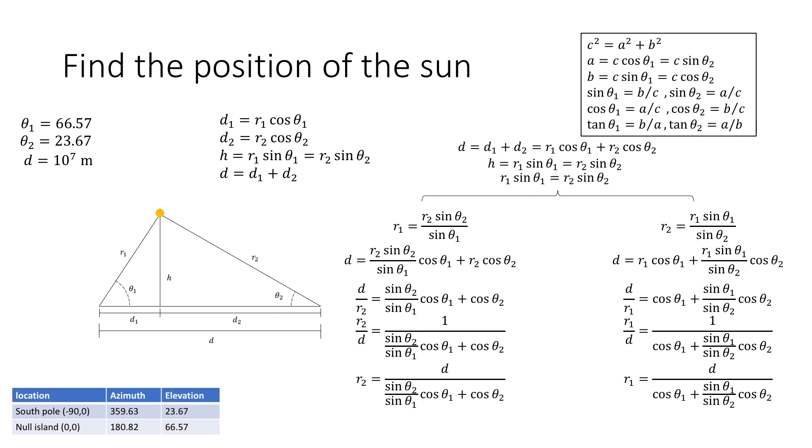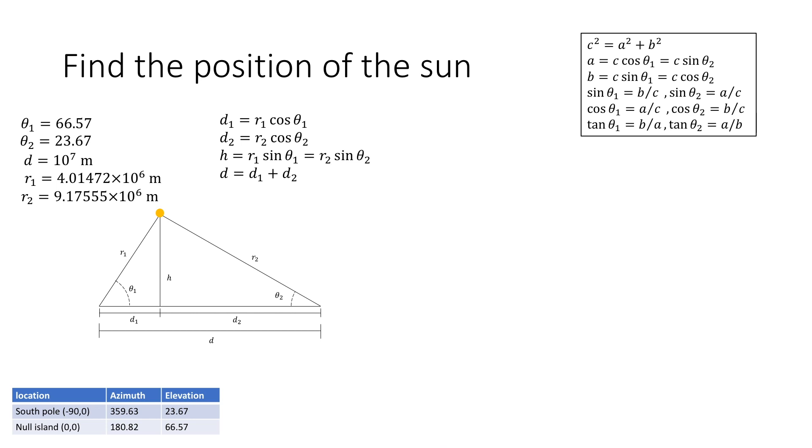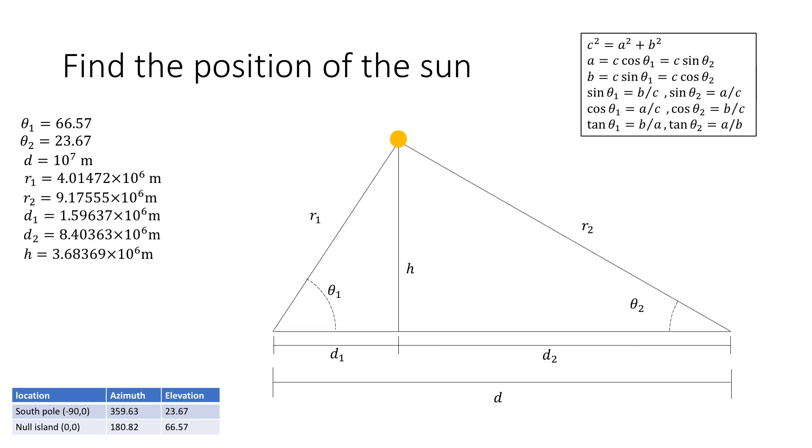Okay so there we have expressions for r1 and r2 and we can actually evaluate them. So we can find the distances: r1 is roughly 4000 kilometers and r2 is roughly 9200 kilometers. Now we can stick those values to the side just for tidiness so we can carry on with our model. So now we have information about r1, we can actually find our distance d1, and we can do the same for d2, and we can just quickly check that the two add up to 10 to the 7 meters, which they do. Next we can calculate the value for h with r1 sine of theta1 and we can repeat that for r2 sine of theta2 just as a sanity check and they are consistent.